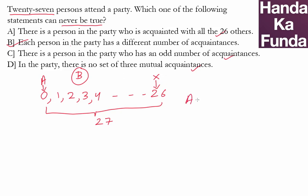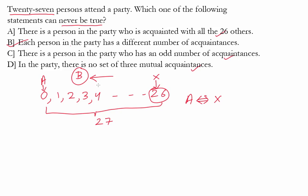There is no relationship between A and X. But if X knows everyone, X knows all 26 others, that means X knows A as well. So this statement is self-contradictory. And that is the reason why statement B can never be true, and why B is our answer. Thank you.